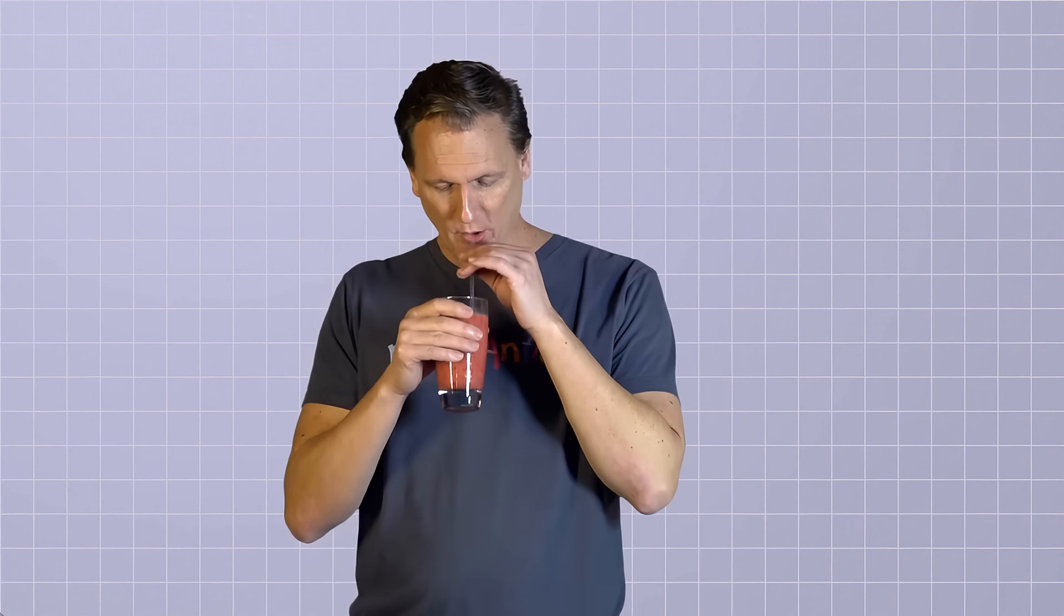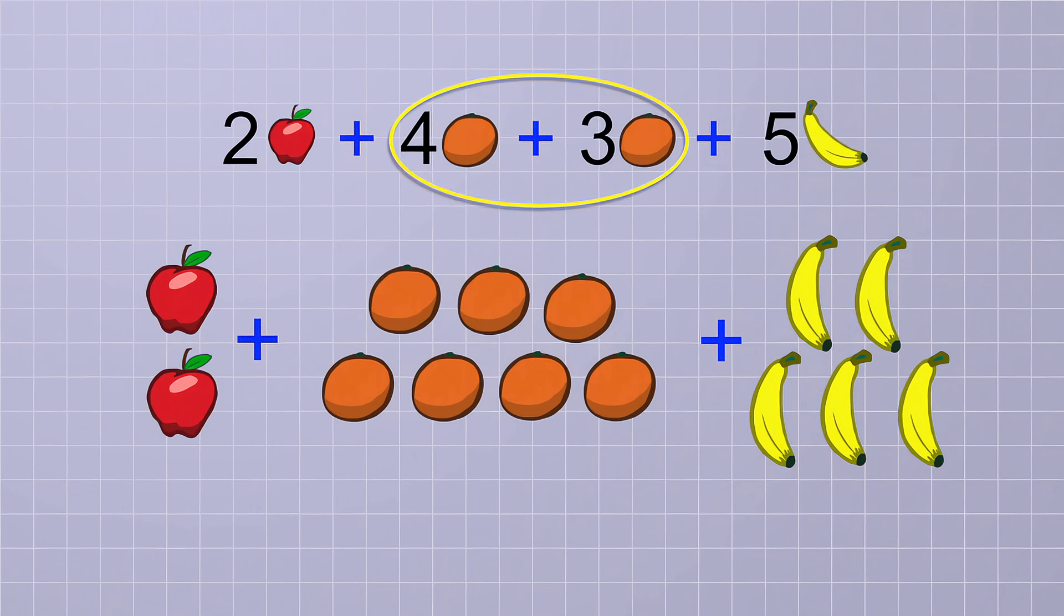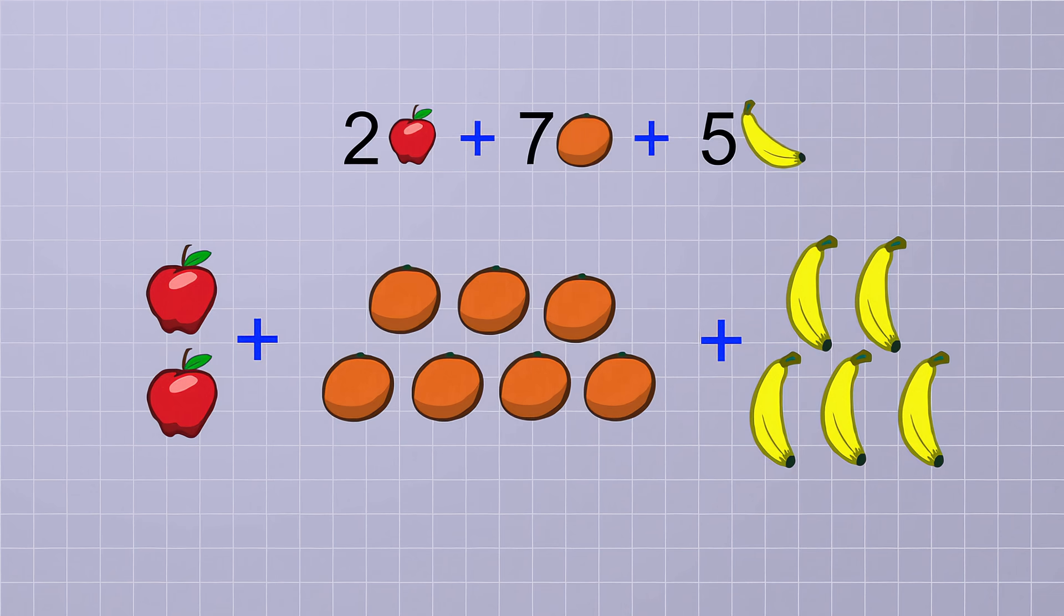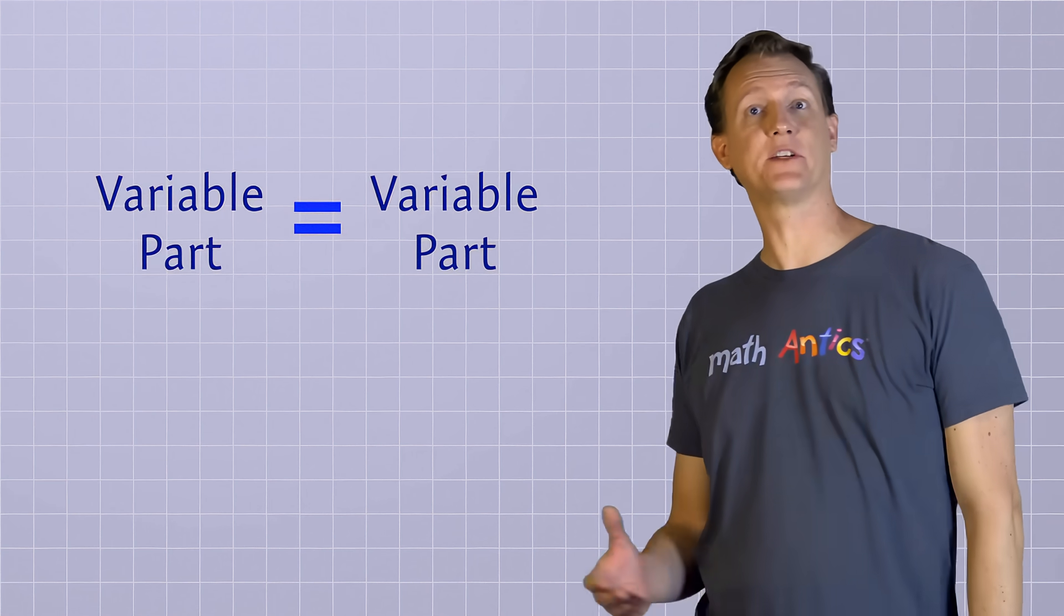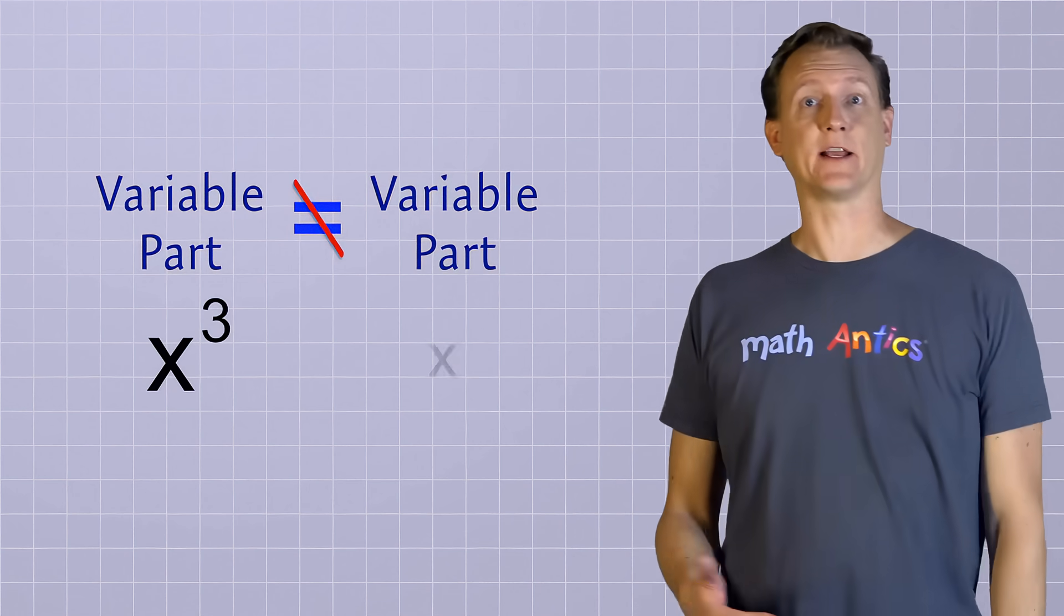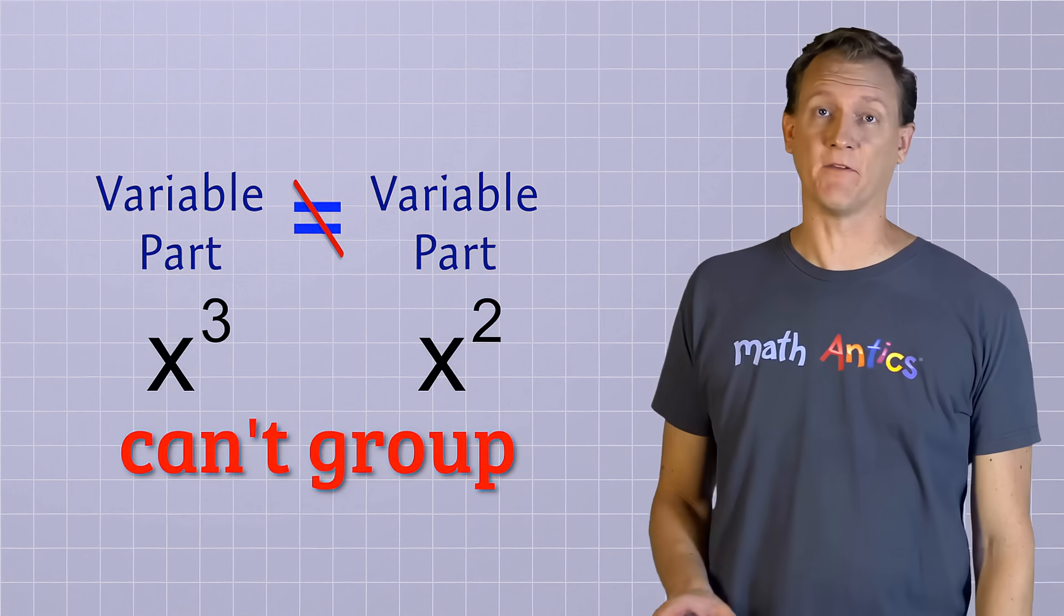So that raises the question, what do you get when you add 2 apples to 4 oranges? Well, you get 2 apples and 4 oranges. Since they're different fruit, you can't combine them. Well, unless you have a blender, that is. Ah, but what about the middle two terms? What do we get if we add 4 oranges and 3 oranges? That's easy! 7 oranges. And that means that we can combine these two terms into a single term, which makes our fruit polynomial simpler. Now do you see why the variable parts of a term have to be exactly the same in order to combine them? If the variable parts are different, like x cubed and x squared, then they represent different things, so we can't group them into a single term the way that we can if the variable parts are the same.